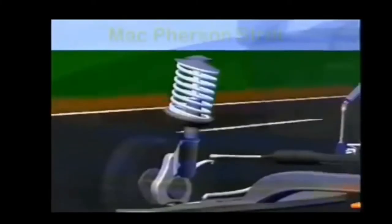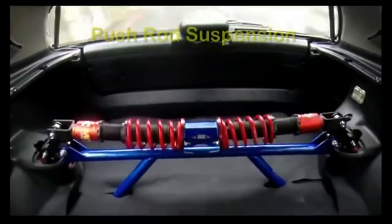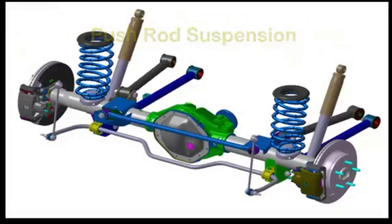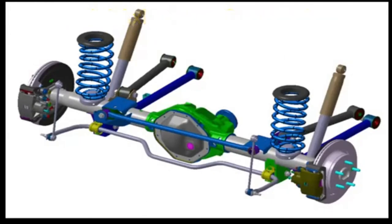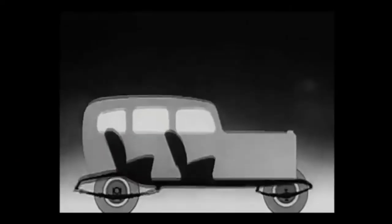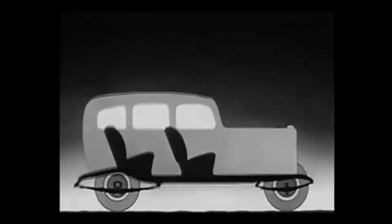Suspensions are widely classified depending upon their designs. Suspensions range from MacPherson strut, push rod suspension, and solid axle beam suspension. You might have wondered about this thing in cars called leaf spring suspension — they are long flexible bars installed on wheels to absorb the shocks.